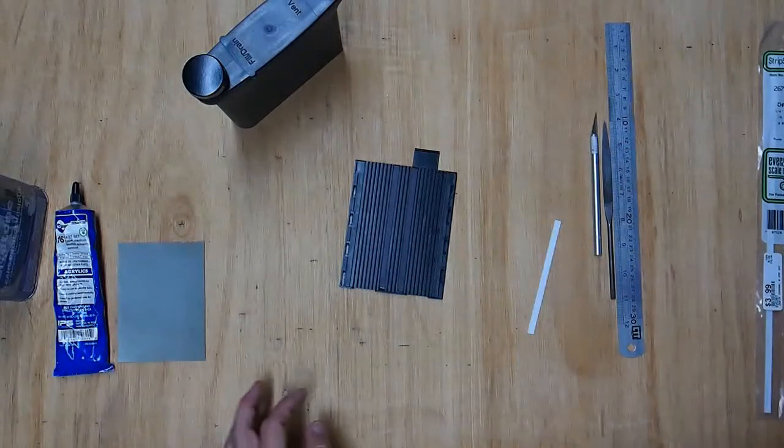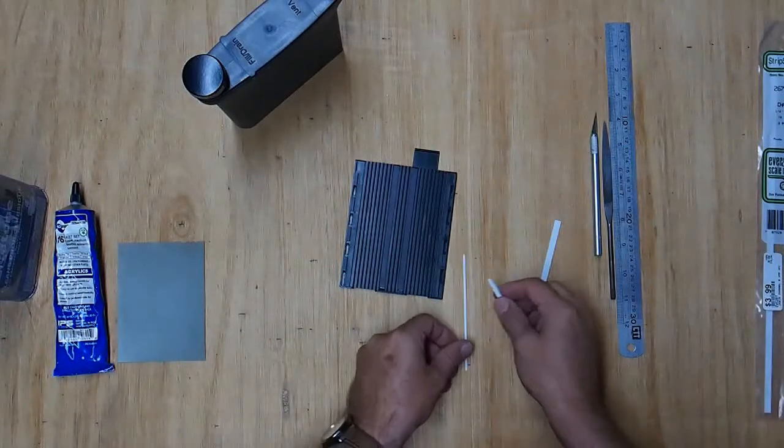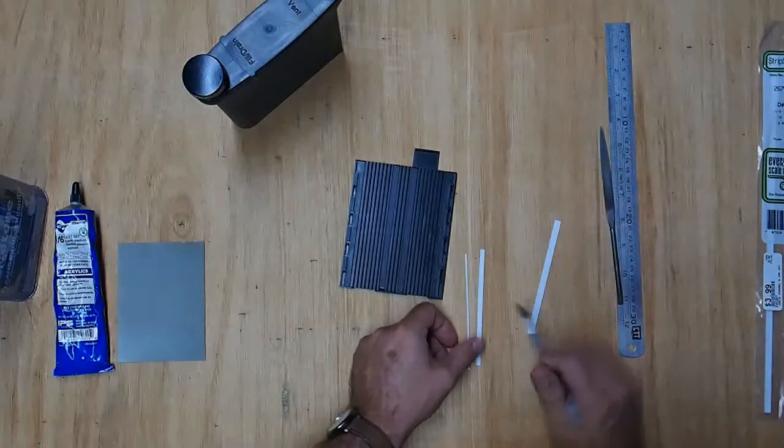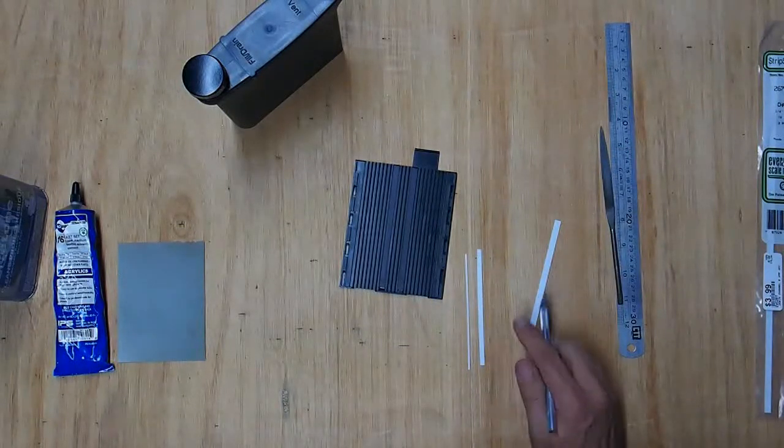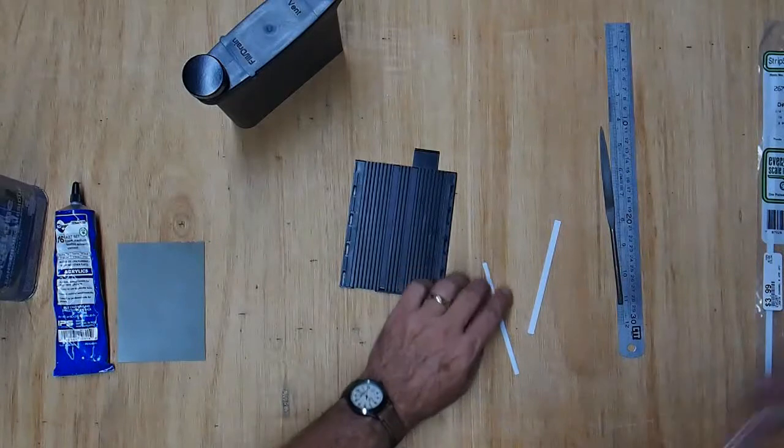Once you've done that, take that piece and cut it lengthwise about a third of the way from one edge, and we don't need that piece.